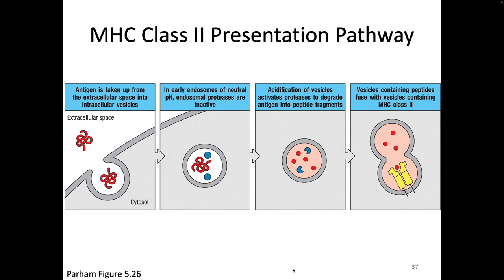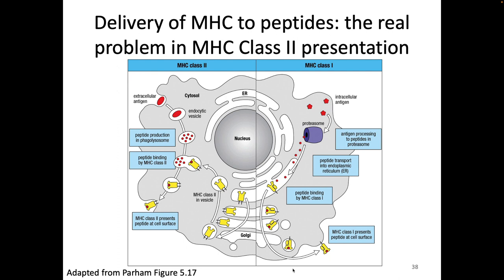Not quite so easy. Not quite so happily ever after. This is the problem for MHC class 2 presentation. MHC class 2 is a transmembrane protein, going to be on the surface of the cell presenting its peptide to the T cell. As a transmembrane protein, it gets biosynthesized in the ER — the same place that class 1 got biosynthesized. And that was the same place that class 1 got its peptides. In fact, we have this whole TAP mechanism shooting peptides into the ER.